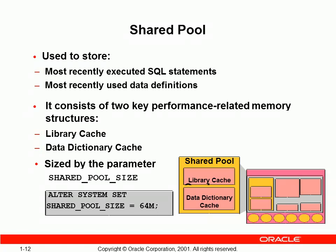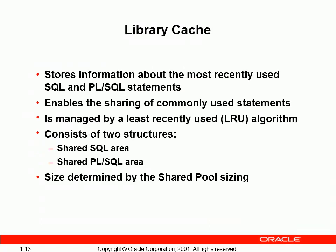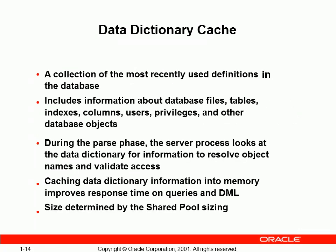In the flow of execution, the shared pool looks for a cached plan to execute an SQL statement or PL/SQL blocks. We can change the size by the ALTER command shown at the bottom of the screen. In the library cache, it has tables created and maintained by an Oracle user and contains user business data. In the data dictionary cache, it has tables created and maintained by the Oracle server and contains information about the database.